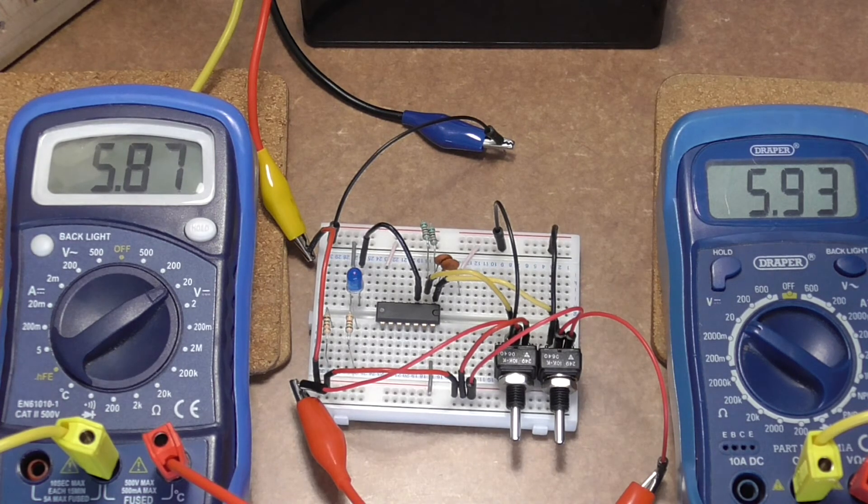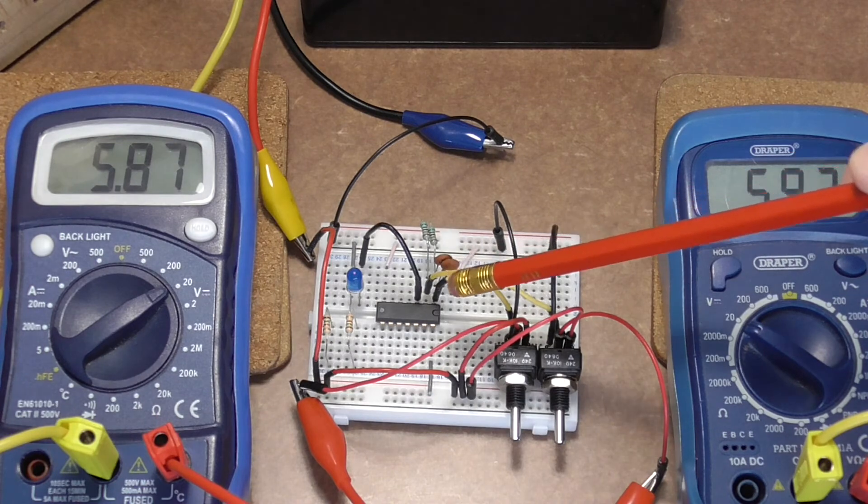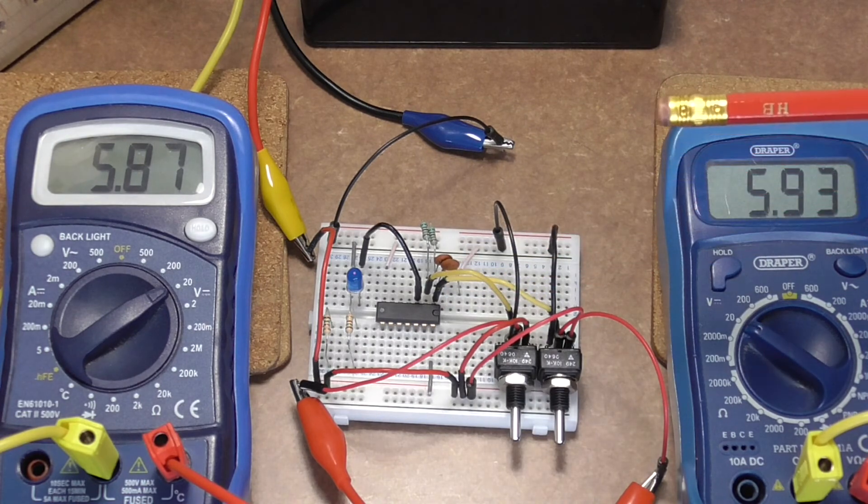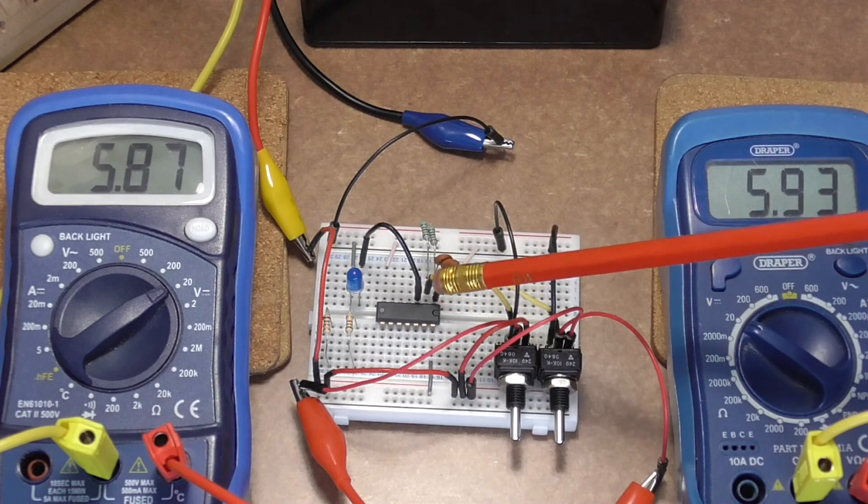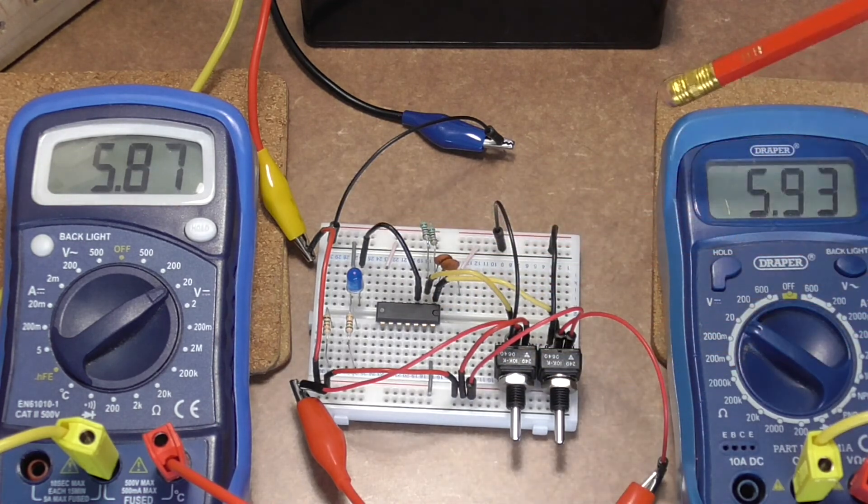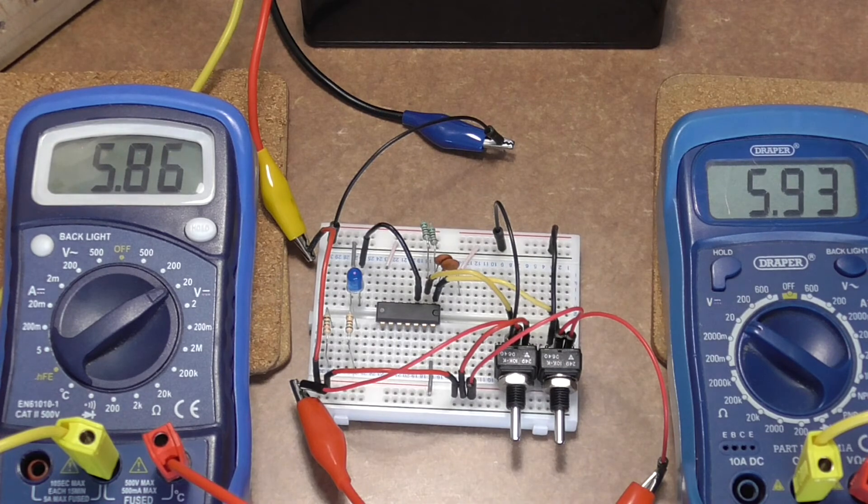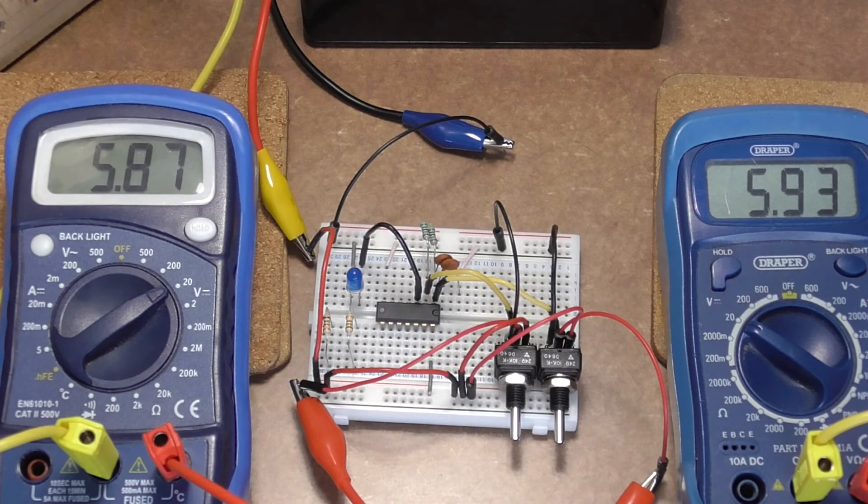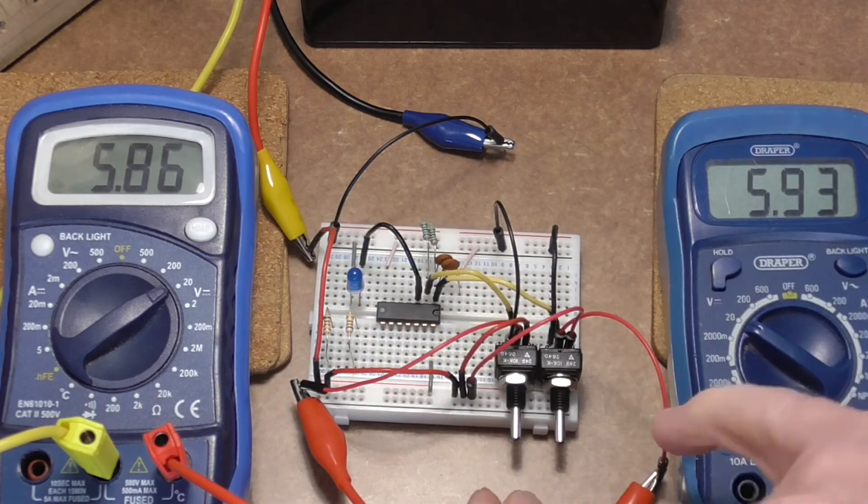Now as this is a Schmidt trigger, it means that it now won't turn off until we've got the inputs to go below, I think it's three point nine. So one of these inputs has to now drop below the three point nine. Let's turn this one down.